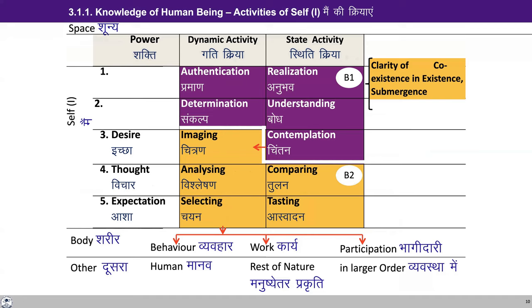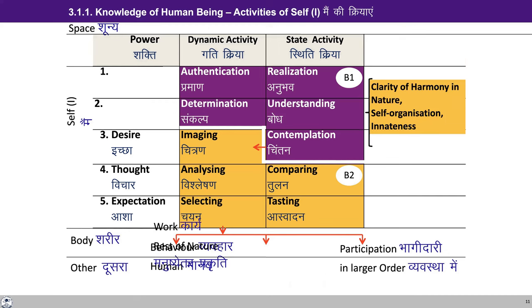When we say submergence, when we say coexistence, this is going to be there at the level of realization. The content of realization is to see the submergence as it is, and thus we have the clarity of coexistence in existence. Similarly, if you look at the content of understanding, it is the clarity of the harmony in nature, the self-organization, the innateness. Now we can see how the three columns that we studied about the different orders of nature relate to the activity of the self.